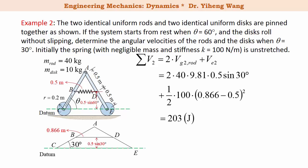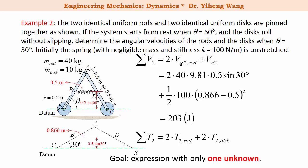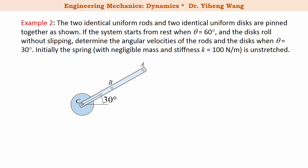We are left with the final kinetic energy of the system, which includes the kinetic energy of the two rods as well as the two disks. Since we have only one equation — conservation of energy — we can only solve for one unknown, so our goal is to rewrite the final kinetic energy as an expression with only one unknown. Because of symmetry, we focus on the left half of the system — one rod and one disk — both undergoing general plane motion at the final state when theta equals 30 degrees.